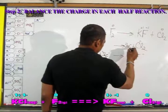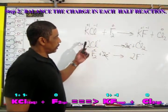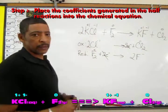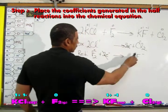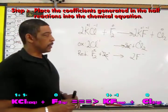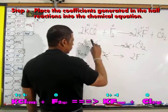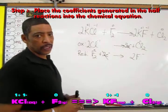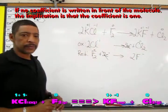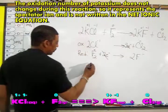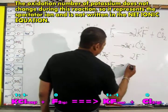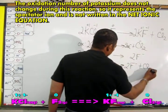Clearly, the electrons will cancel. Now, to balance the chemical equation, we place a 2 in front of the potassium chloride and a 2 in front of the potassium fluoride. Notice that each diatomic molecule has a coefficient of 1, so the implied 1 exists in the balanced equation. The net ionic equation for this reaction will be as follows: 2 Cl⁻ + F₂ → 2 F⁻ + Cl₂.